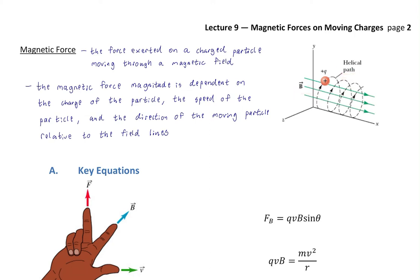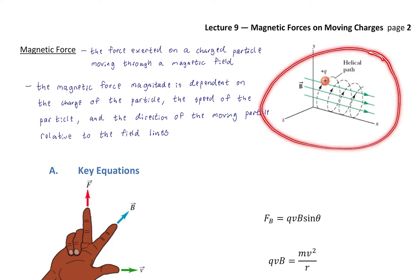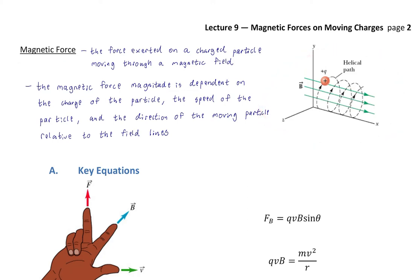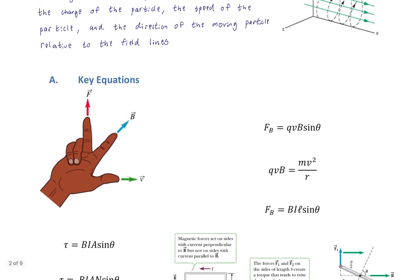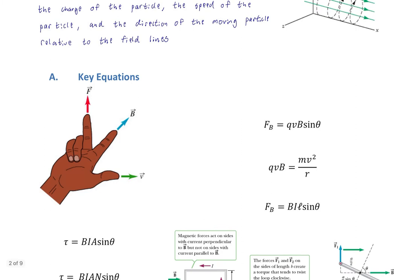The reason the path is helical has to do with the direction of the charged particle relative to the magnetic field. It's also possible for a charged particle to have a perfectly circular planar path, and we'll talk about that in two of the examples — specifically the first two examples when we get to the practice problems. Let's get down to the key equations, which will also involve the right-hand rule.